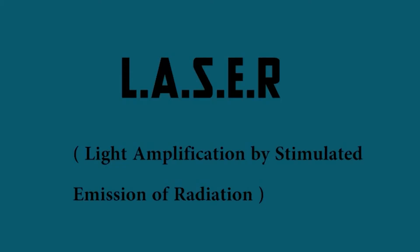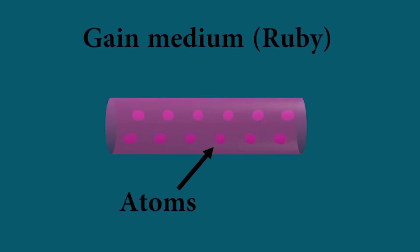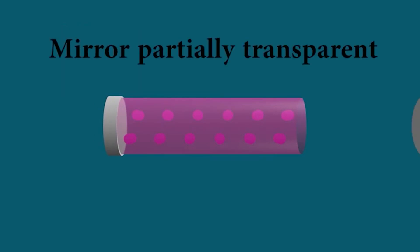Now let us see the animation of the working principle of laser. We all know it needs an active element. Here we use the ruby as the active element. Inside the active element, we have number of atoms in it. In both sides of the active element, two end mirrors are attached. One mirror is fully reflecting and another one is partially reflecting.